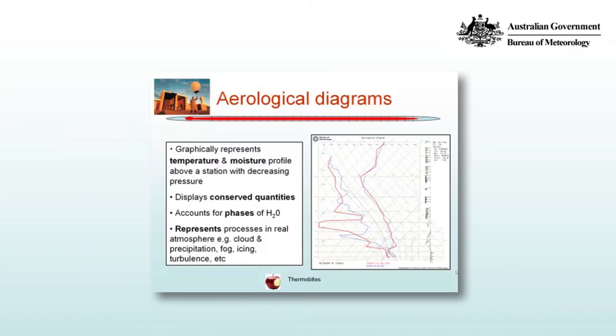And we want to represent processes that occur in the real atmosphere like cloud formation, the occurrence of precipitation, fog formation, icing, and indeed turbulence.